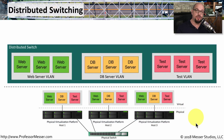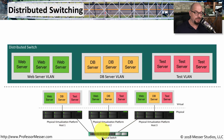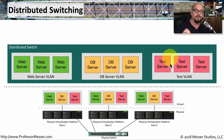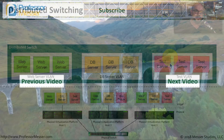So if we look at our original diagram, which has our virtualization platforms in the physical world along with our physical switch, we've got virtual servers running on each of these virtualization platforms. On top of that, we've layered a distributed switch, which groups the different resources into their own individual VLANs.